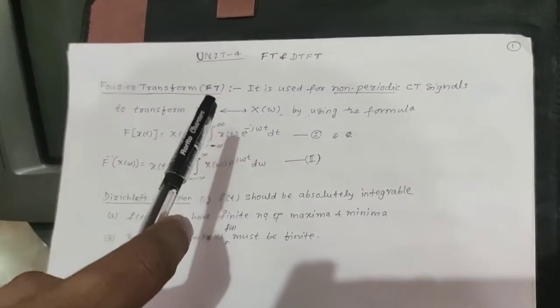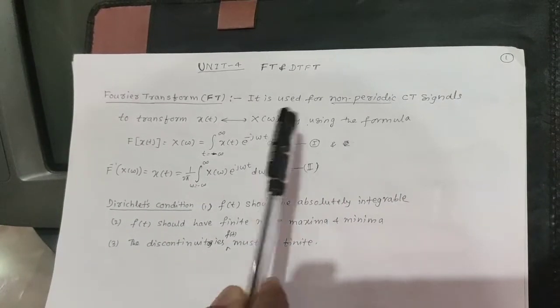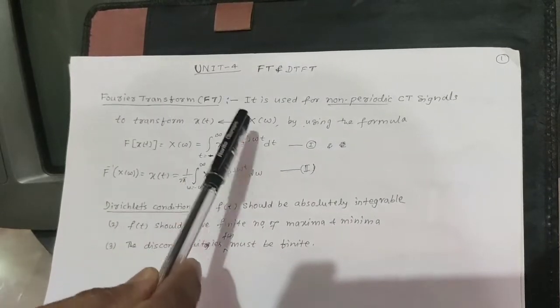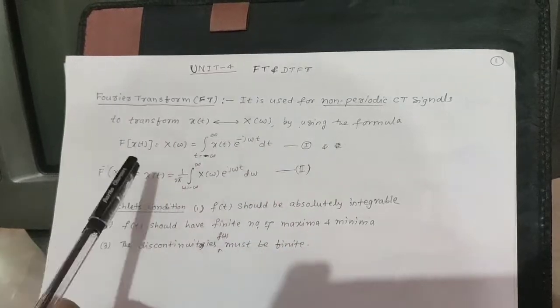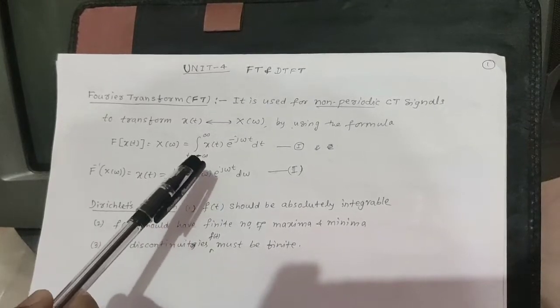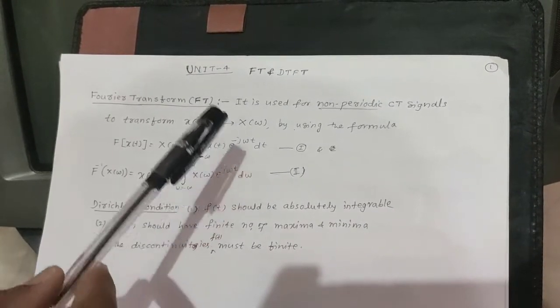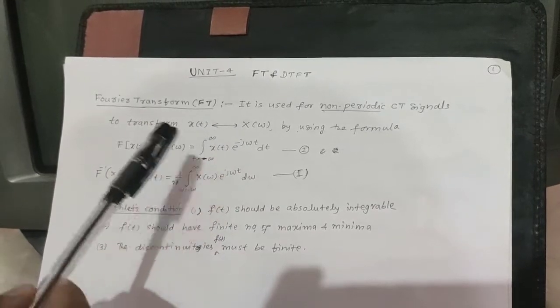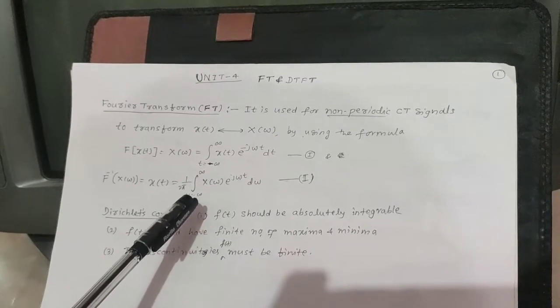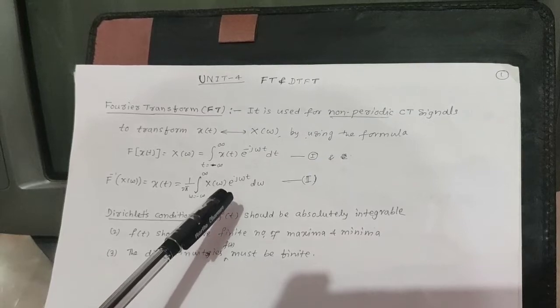Today I am going to give a lecture on Fourier transform and discrete time Fourier transform. The Fourier transform is used for non-periodic continuous time signals to transform a time domain signal to the frequency domain using the formula: X(ω) = ∫ from −∞ to +∞ x(t) e^(−jωt) dt, and its inverse Fourier transform is x(t) = (1/2π) ∫ from −∞ to +∞ X(ω) e^(jωt) dω.